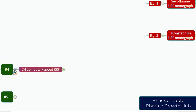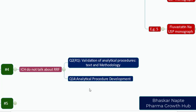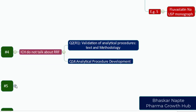Challenge number four: ICH is silent on the relative response factor. ICH guidelines Q2R1 (validation) and Q14 (analytical procedure development) do not talk about the establishment of RRF, yet we often calculate RRF during analytical method validation. There is an urgent need for ICH to address the relative response factor.